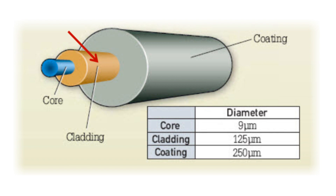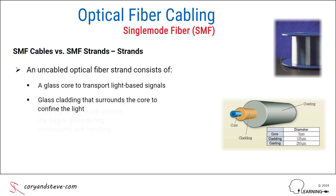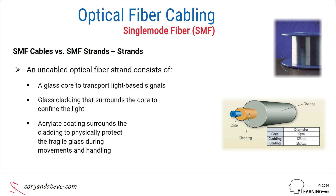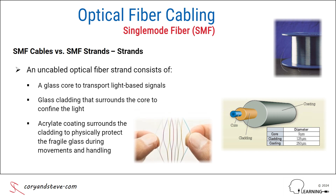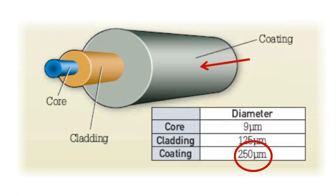The combined diameter of the core and the cladding is 125 microns, or one-eighth of a millimeter. The outermost layer of a single-mode fiber strand is the acrylate or plastic coating, which allows for the movement and handling of the very delicate glass core and cladding without breakage. Adding this coating doubles the diameter of the strand to 250 microns, or one-quarter of a millimeter.